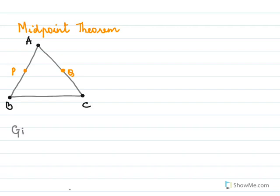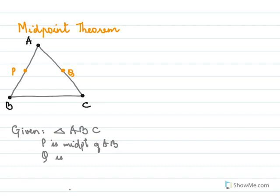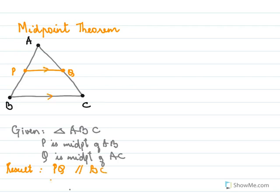So it is given in triangle ABC, P is the midpoint of AB and Q is the midpoint of AC. If we join the midpoints, we get PQ. The result is: PQ is parallel to BC and PQ is also half of BC. This is the midpoint theorem.